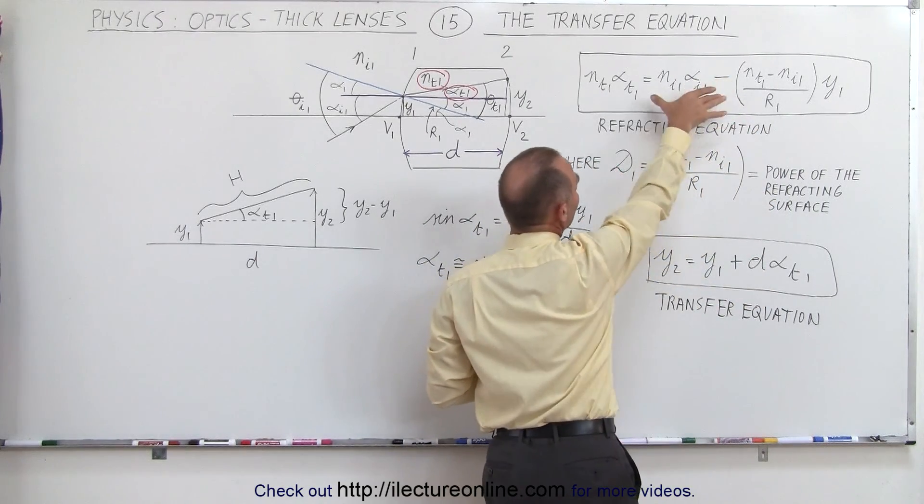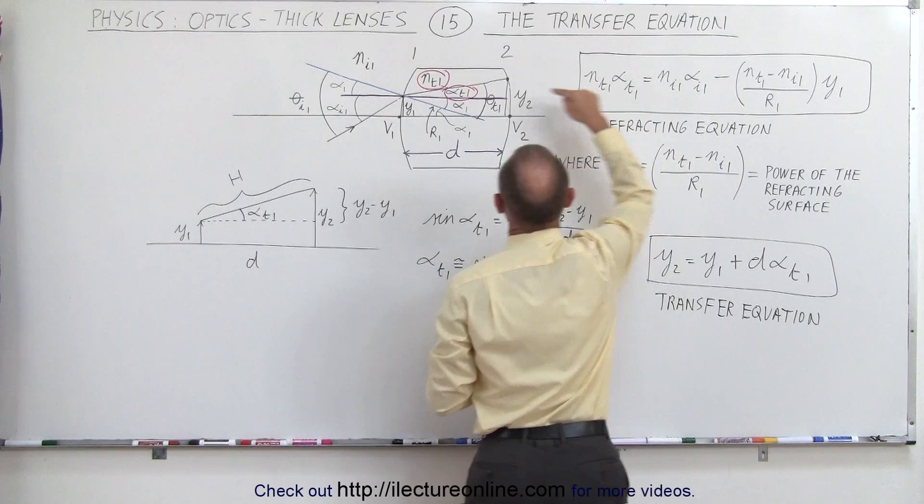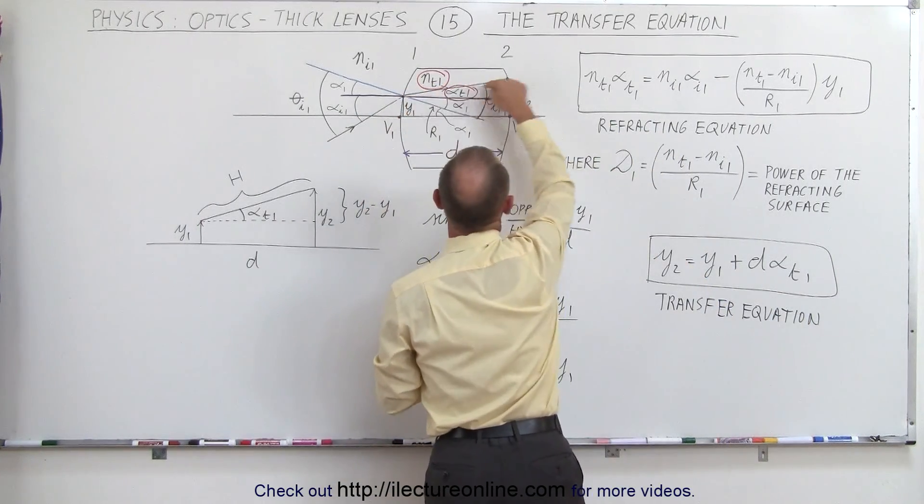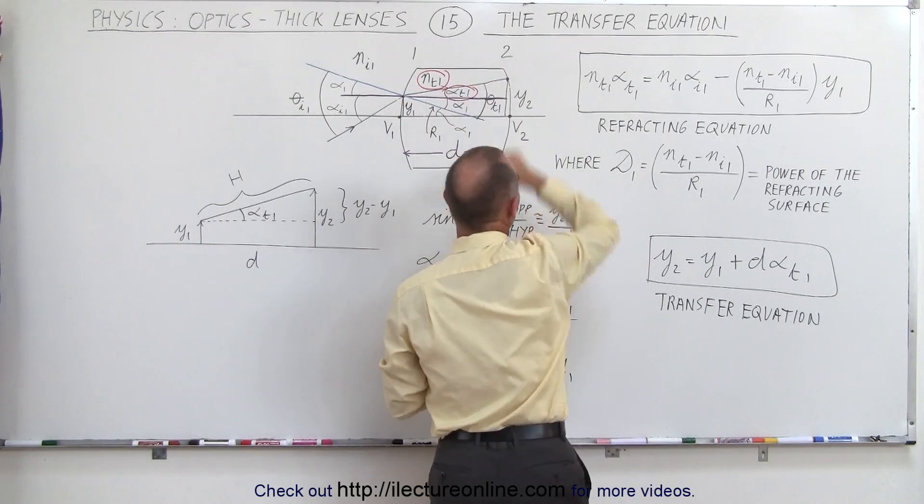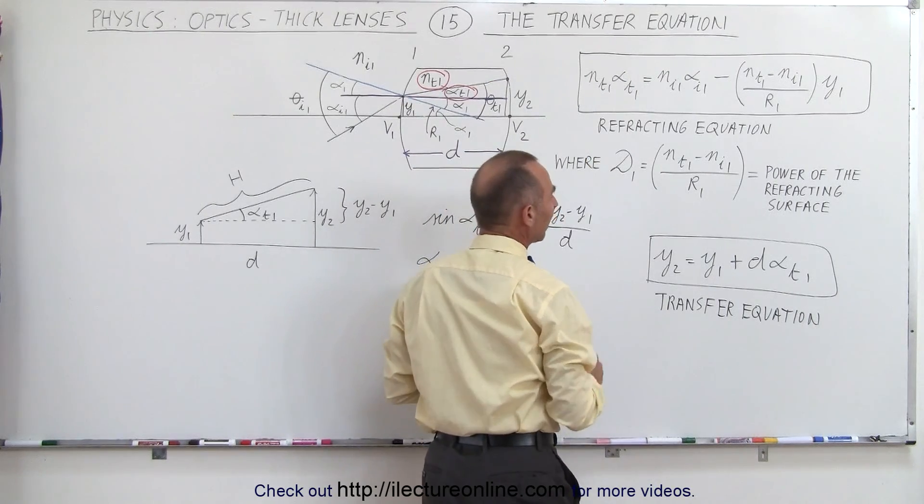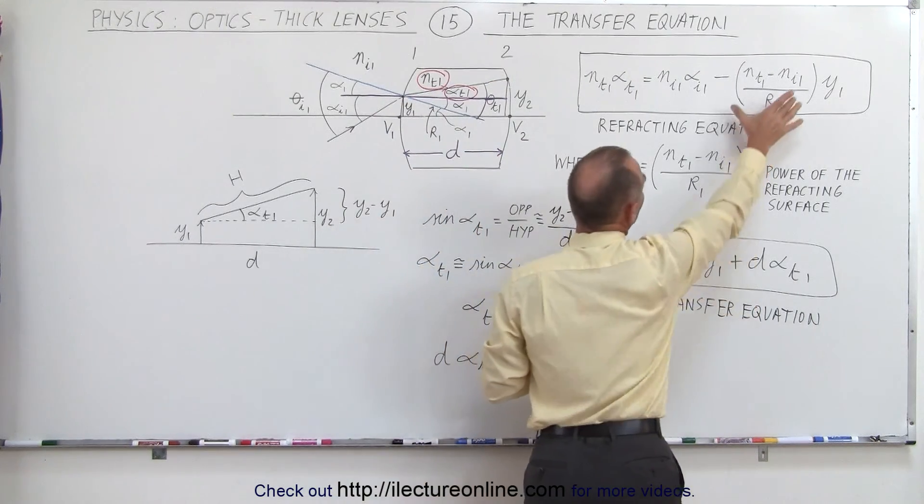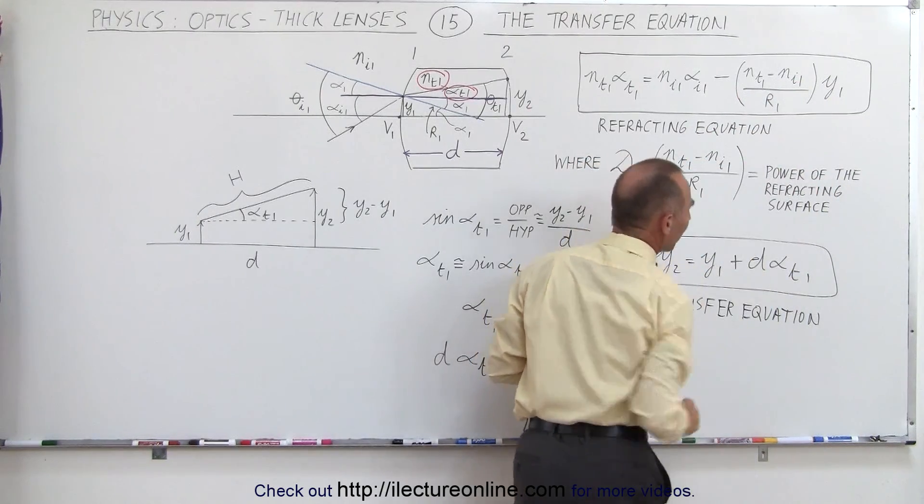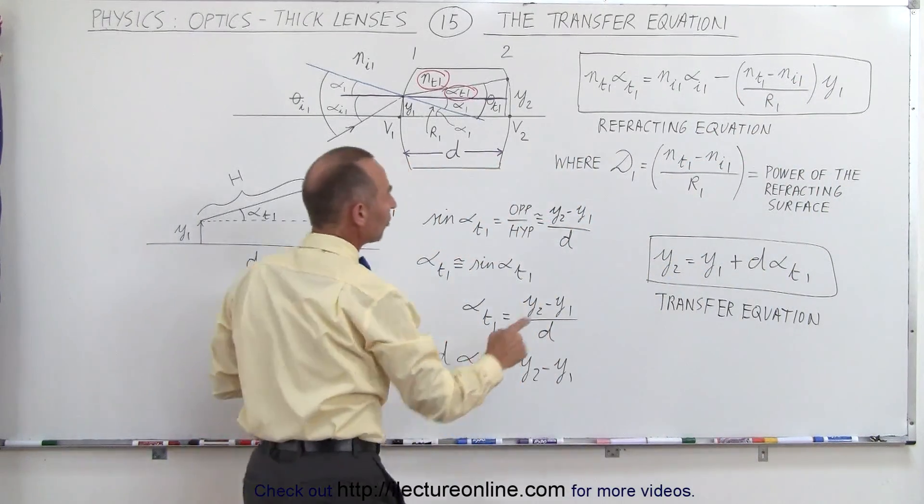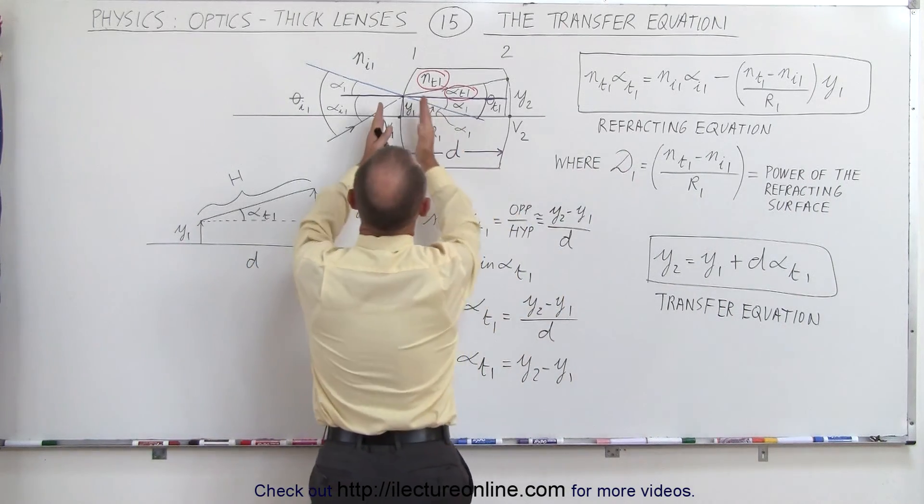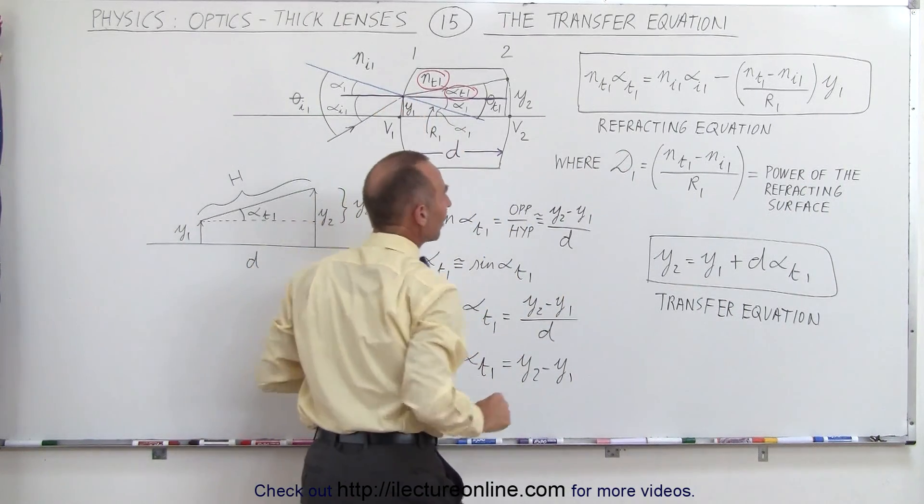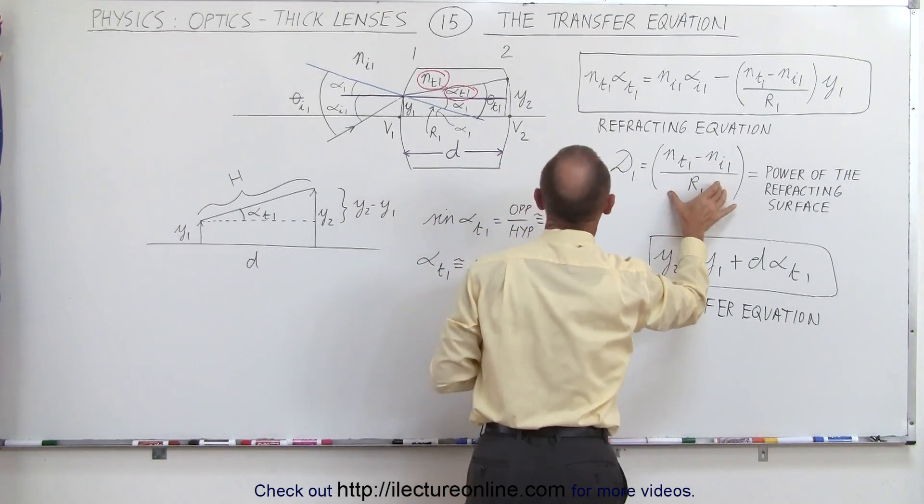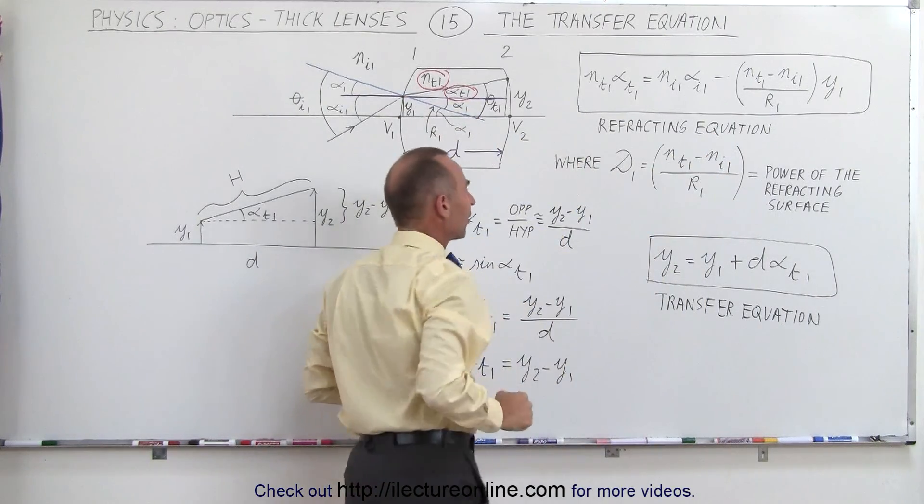This is known as the refracting equation. This describes what happens across the first boundary. This describes what happens within the lens as it travels through the lens, transfers across the lens, and also realizing here that this quantity right here is considered the power of the refracting surface. So since this is labeled as d1, that describes the power, which is defined by the difference in the index of refraction, divided by the radius of curvature of the front side of the lens.